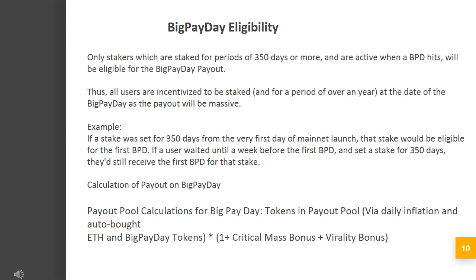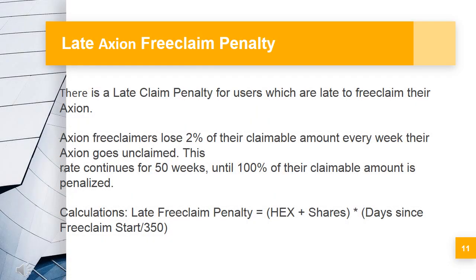Calculation of payout on Big Pay Day. Payout pool calculations for Big Pay Day: tokens in payout pool via daily inflation and auto-bought ETH and Big Pay Day tokens, multiplied by (1 + critical mass bonus + virality bonus). Late Axion free claim penalty: there is a late claim penalty for users which are late to free claim their Axion. Axion free claimers lose 2% of their claimable amount every week their Axion goes unclaimed. This rate continues for 50 weeks, until 100% of their claimable amount is penalized. Late free claim penalty equals HEX shares times days since free claim start divided by 350.